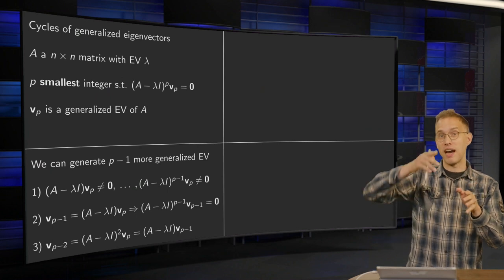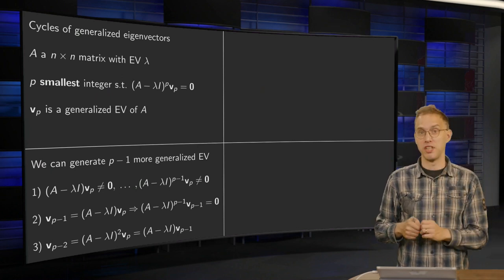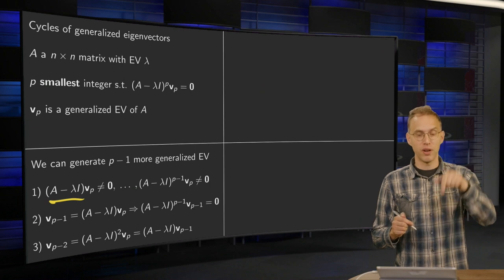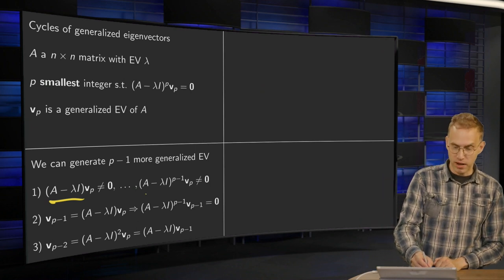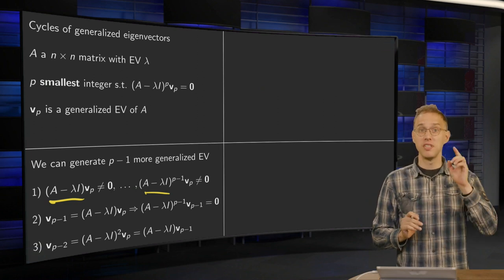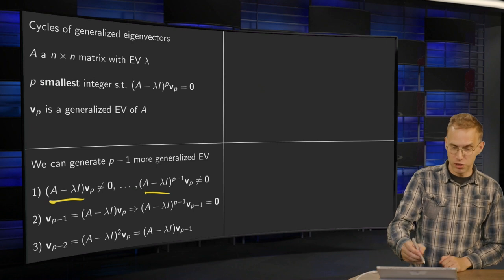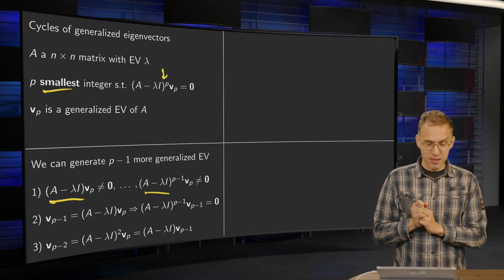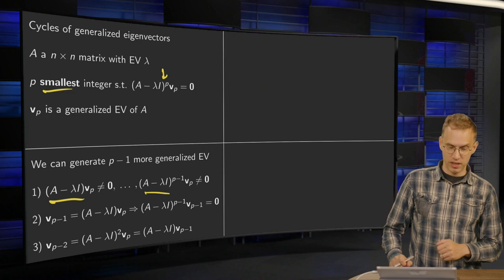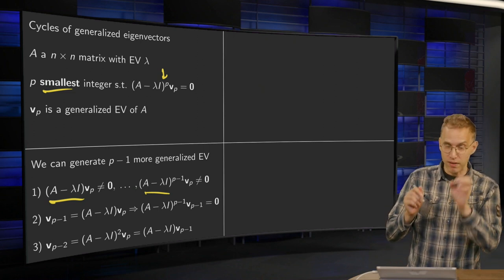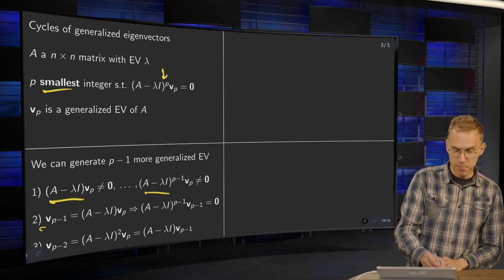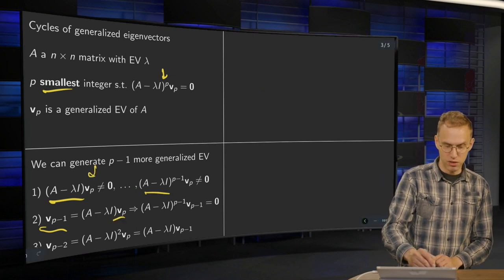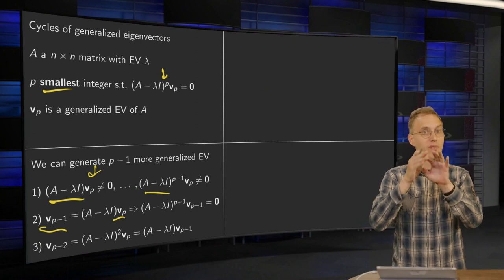Since p is the smallest integer such that (A − λI)^p times vp equals zero, if you compute (A − λI)^k times vp for k equal to 1, 2, 3, or p−1, you get something which is non-zero. That's the first thing you know, just because p is the smallest integer giving zero.